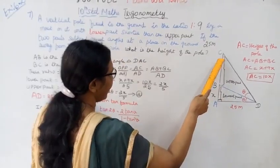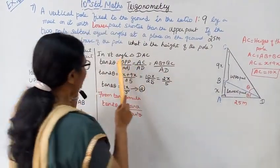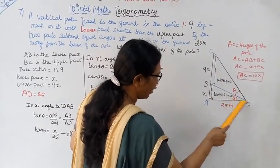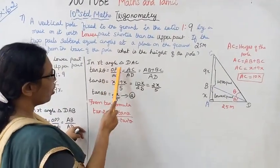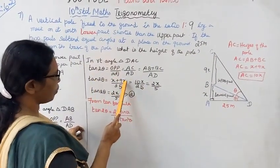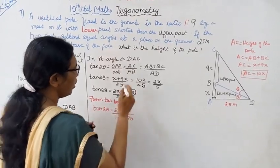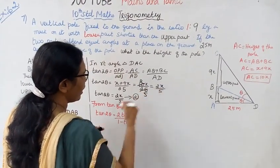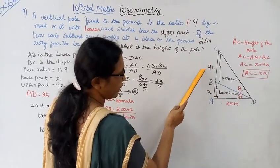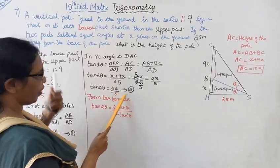In triangle DAC, the angle at D is theta plus theta equals 2 theta. Tan 2 theta equals opposite by adjacent, which is AC by AD. AC equals x plus 9x equals 10x, and AD equals 25. So tan 2 theta equals 10x by 25, which simplifies to 2x by 5. This is the second equation.